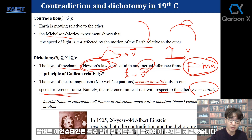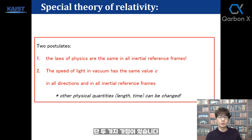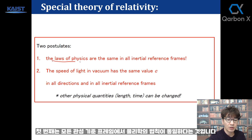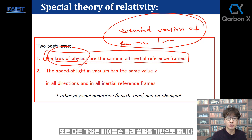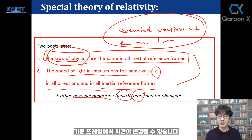Albert Einstein solved this problem by developing Special Relativity. What were the postulates of Einstein's Special Relativity? There are only two assumptions. The first is: the laws of physics are the same in all inertial reference frames. The second assumption is based on the Michelson-Morley experiment: the speed of light in vacuum has the same value c in all reference frames.